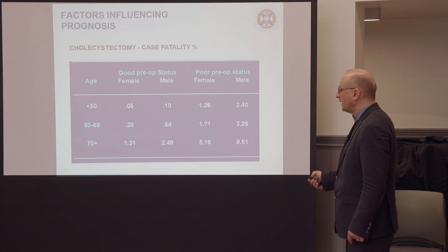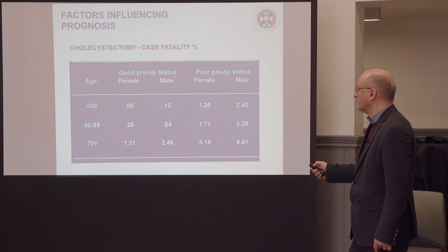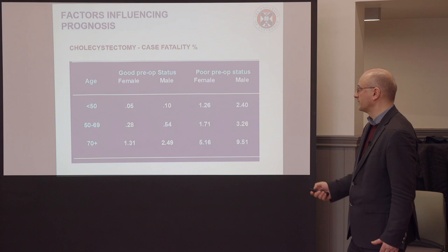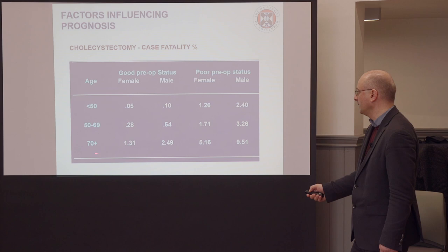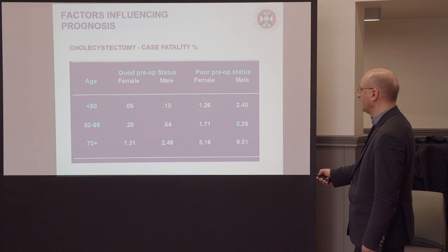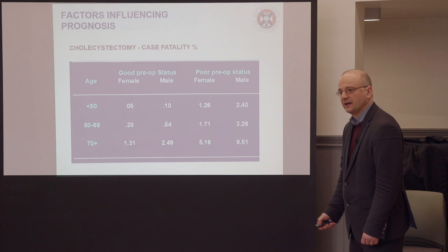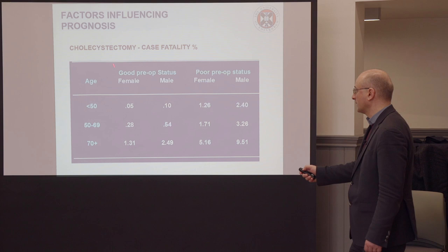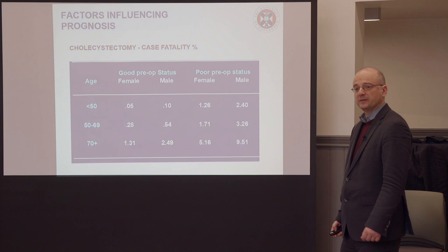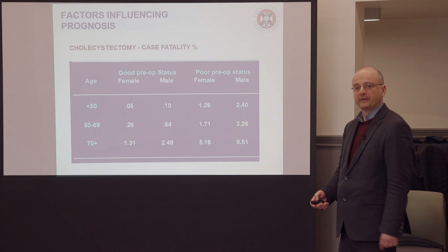Look at multiple factors operating here. This is case fatality at or after surgery for cholecystectomy for cholecystitis. If you have age less than 50, 50 to 69, and 70 plus, those who are younger always have smaller numbers than those who are older. So age at surgery is clearly a risk factor for the outcome. Those with good preoperative status always have better outcomes than poor preoperative status, and females always have better outcomes than males. So a multitude of factors contributes to the prognosis of this intervention.